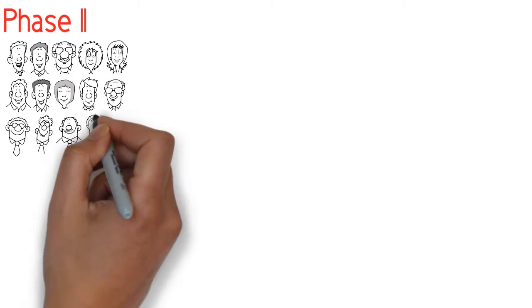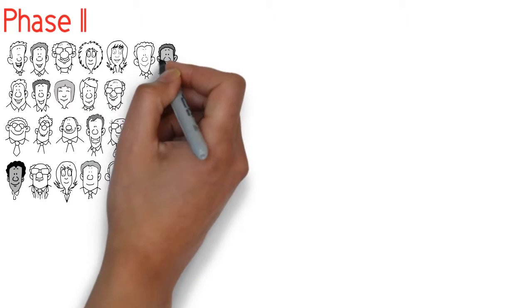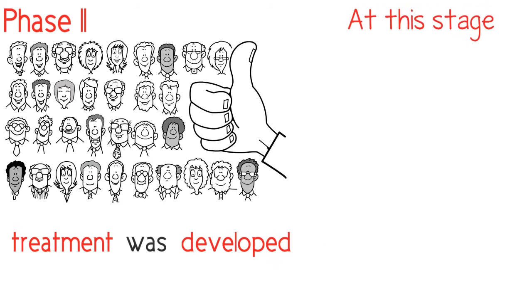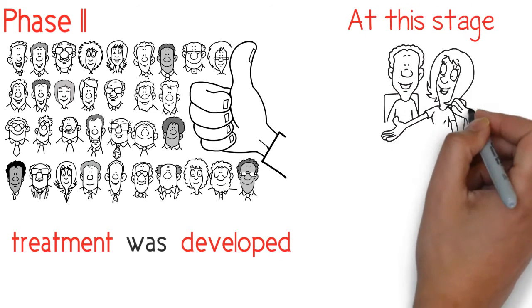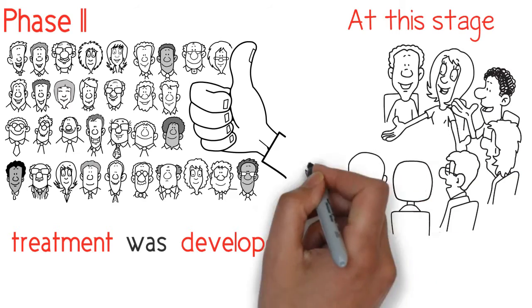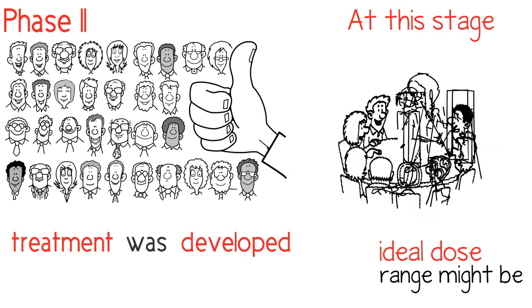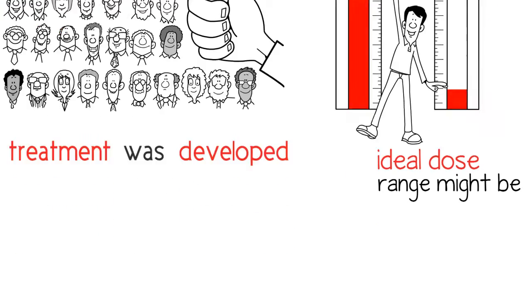Phase 2: In a phase 2 trial, the drug is given to volunteers within the target population, those who have the illness for which the treatment was developed. At this stage, researchers are trying to determine if the treatment impacts the disease process and what the ideal dose range might be, while also considering benefits and adverse effects.